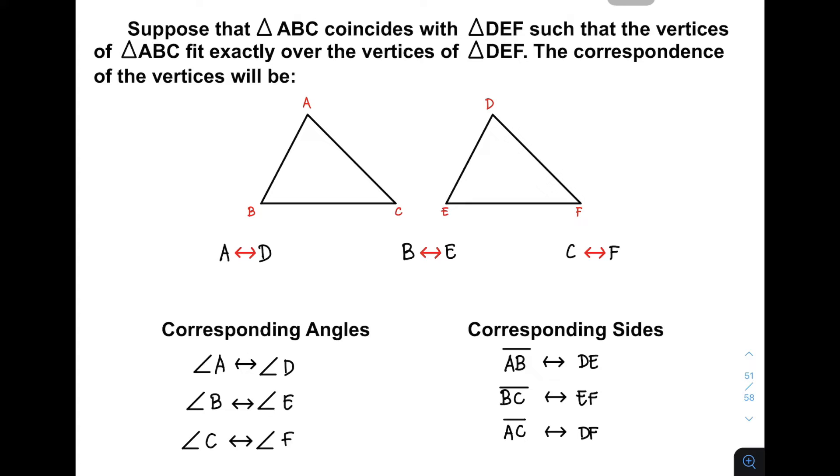And another correspondence for the vertices is that you have point B corresponds to E. This point corresponds to this point. And another pair of vertices that needs to be corresponding, you have point C corresponds to point F. So these two vertices must have a correspondence. If those vertices correspond to each other, we can have these corresponding angles.